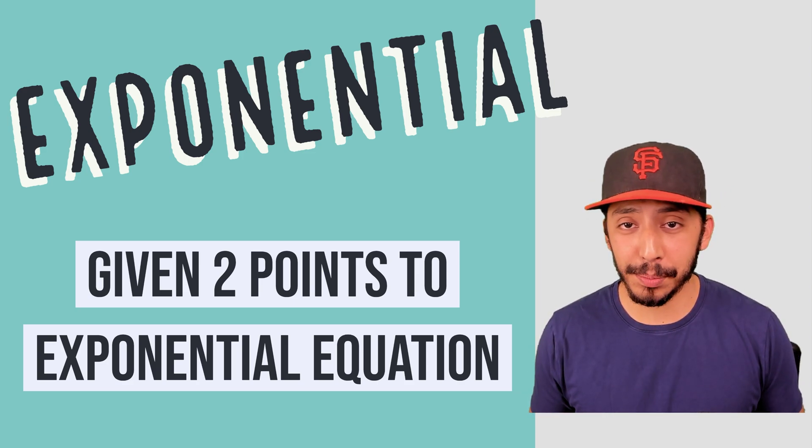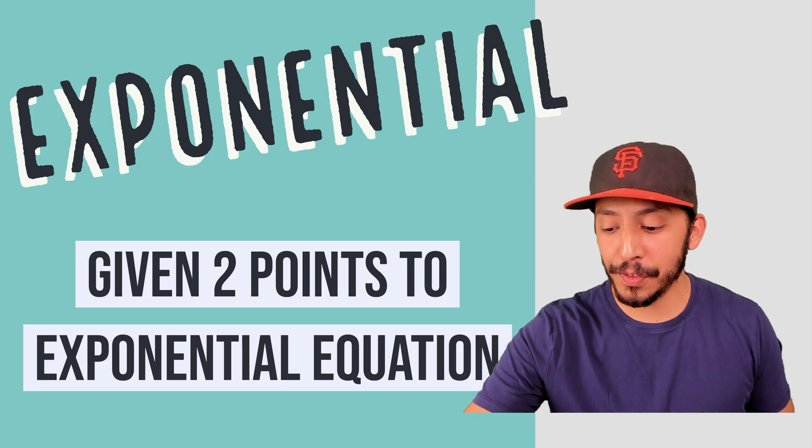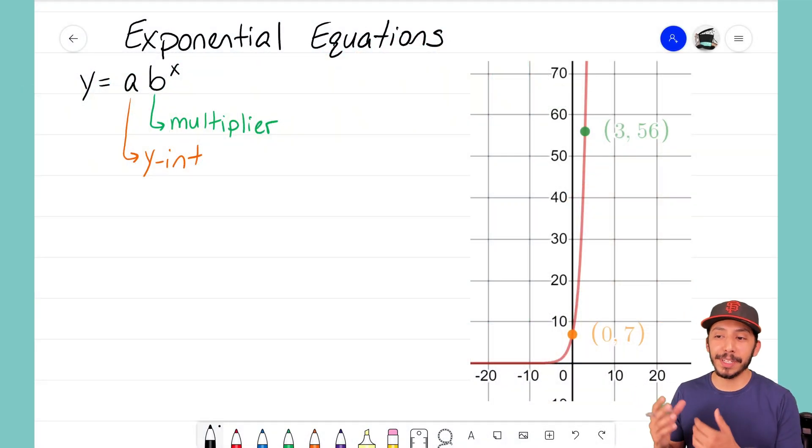If you notice here I have an exponential curve and I know two points on that exponential curve. I have (0, 7) and I have the other point up there at (3, 56). Now we want to determine an equation that will be in the form of y = a·b^x.